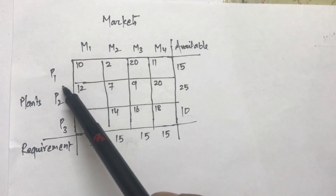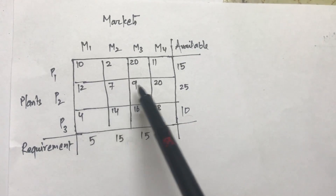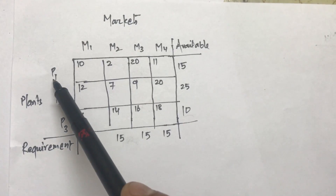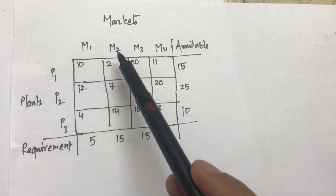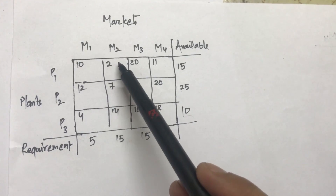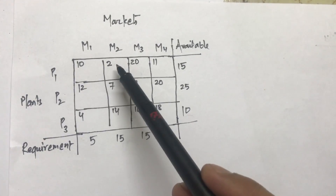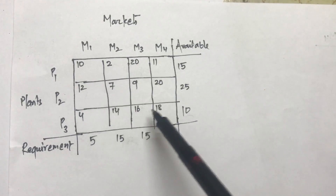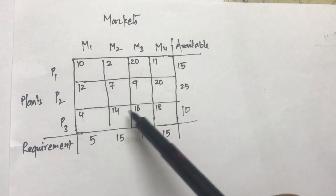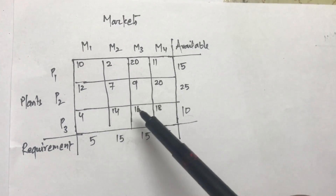There are four markets and three plants in this problem, and these are the associated costs. For example, supplying one unit from plant P1 to market M2 costs two rupees — you can multiply by ten thousand or lakhs depending on the transportation cost. Also note that you can reduce the matrix by dividing all numbers by a common factor, such as a hundred, to get smaller numbers for faster calculation.